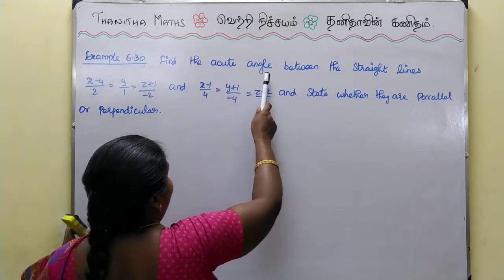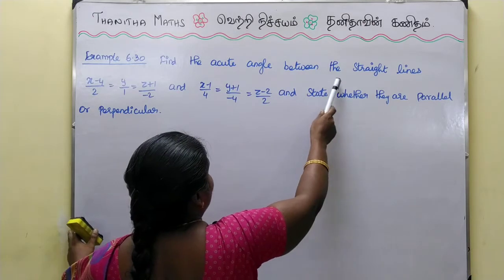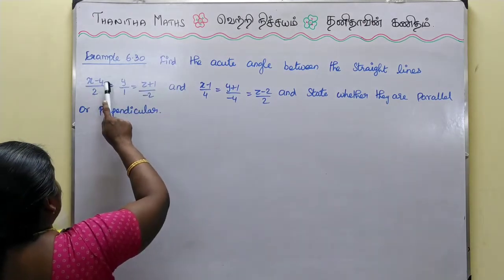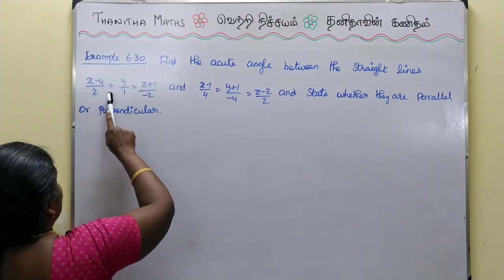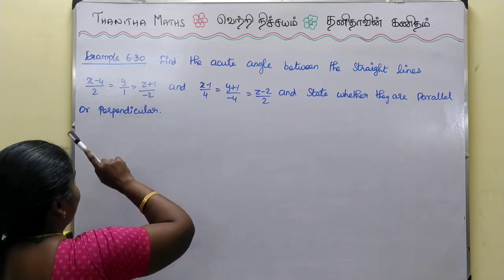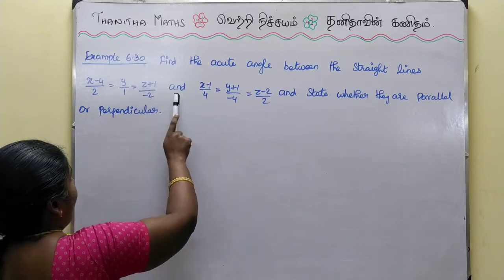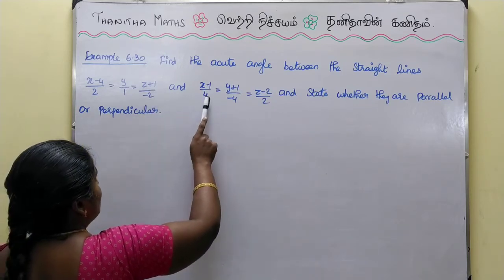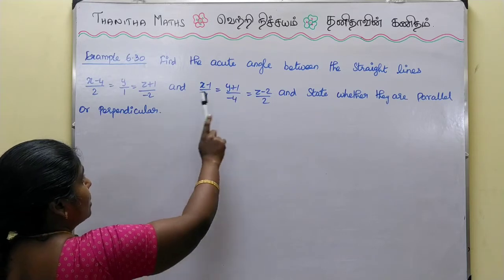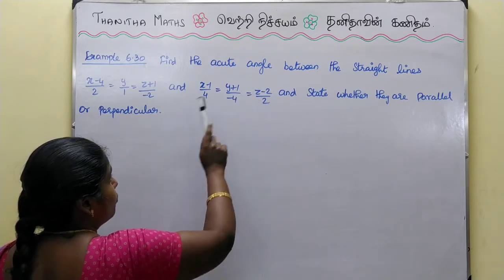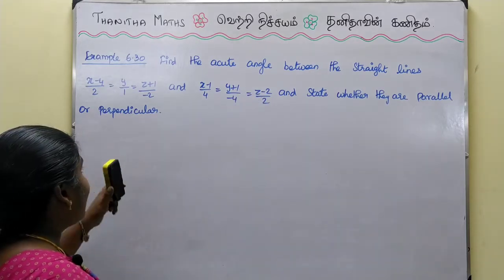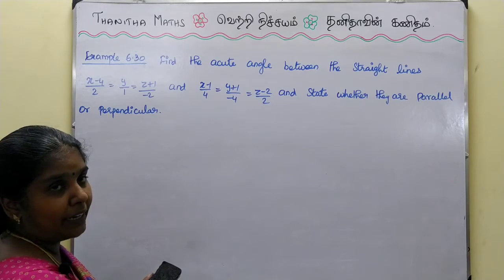Find the acute angle between the straight lines: (x-4)/2 = y/1 = (z+1)/(-2) and (x-1)/4 = (y+1)/(-4) = (z-2)/2, and state whether they are parallel or perpendicular.